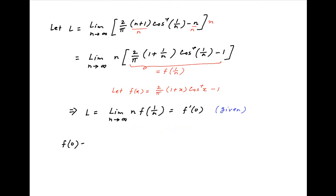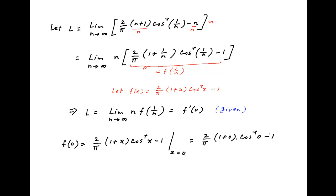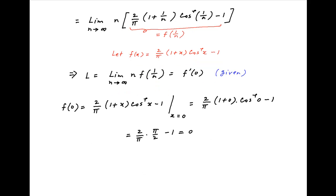Now notice that the value of f(x) at x equals 0, that is f(0), is equal to 2 upon pi times 1 plus x times cos inverse x minus 1 evaluated at x equals 0. This simplifies to 2 upon pi times cos inverse 0 minus 1. Since cos inverse 0 equals pi upon 2, f(0) equals 2 upon pi times pi upon 2 minus 1, which equals 0, as given in the problem statement.